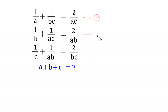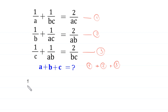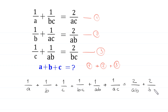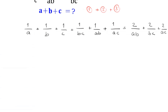Let's call this equation one, this equation two, and this equation three. First we add these three equations — equation one plus equation two plus equation three. This will become 1/a + 1/b + 1/c + 1/(bc) + 1/(ab) + 1/(ac) is equal to 2/(ab) + 2/(bc) + 2/(ac).